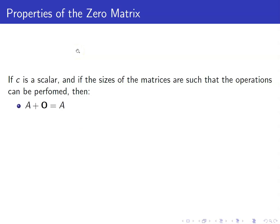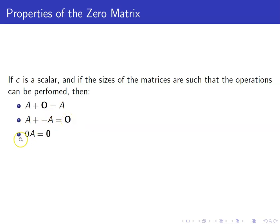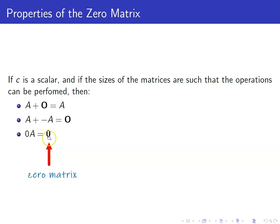Here are some of the properties of the zero matrix. First, if you have any matrix A and you add it with the zero matrix, you will just get the same matrix A. And A, when you add it with its negative, you will get the zero matrix. And lastly, the scalar zero multiplied with your matrix A will give you the zero matrix.